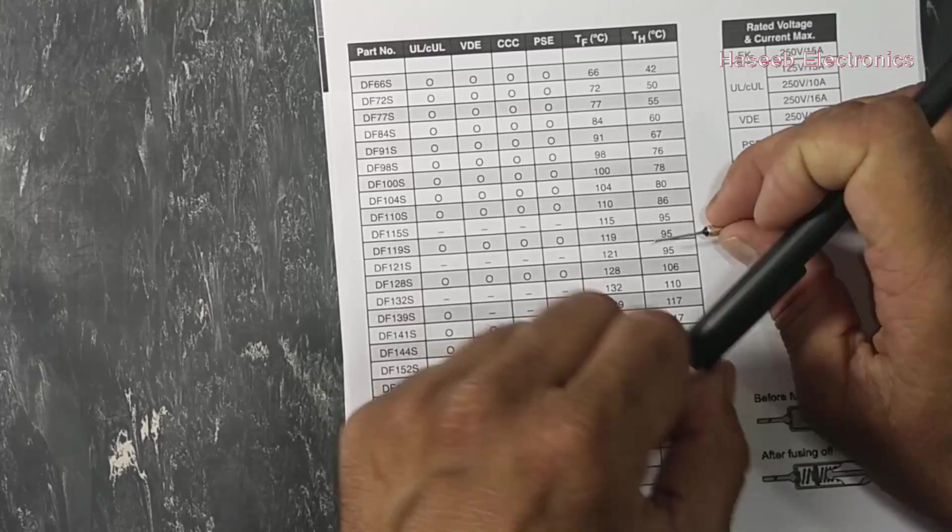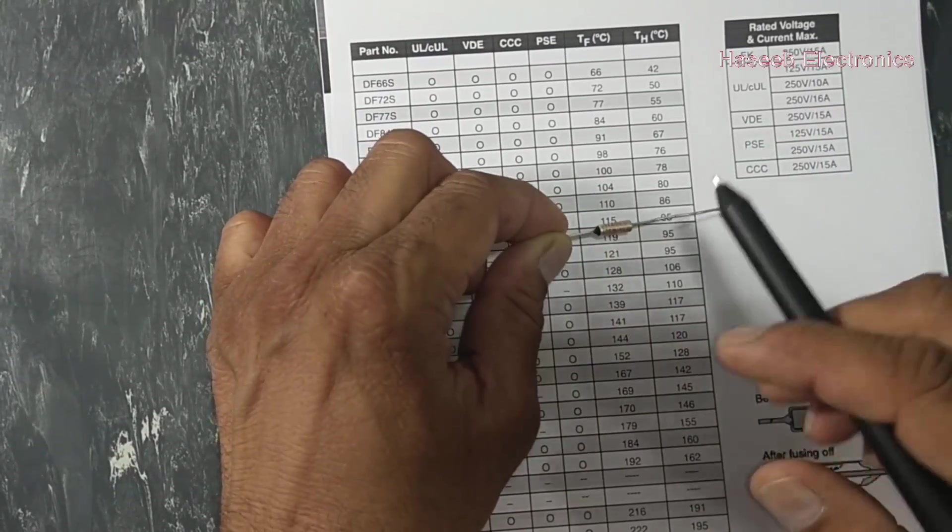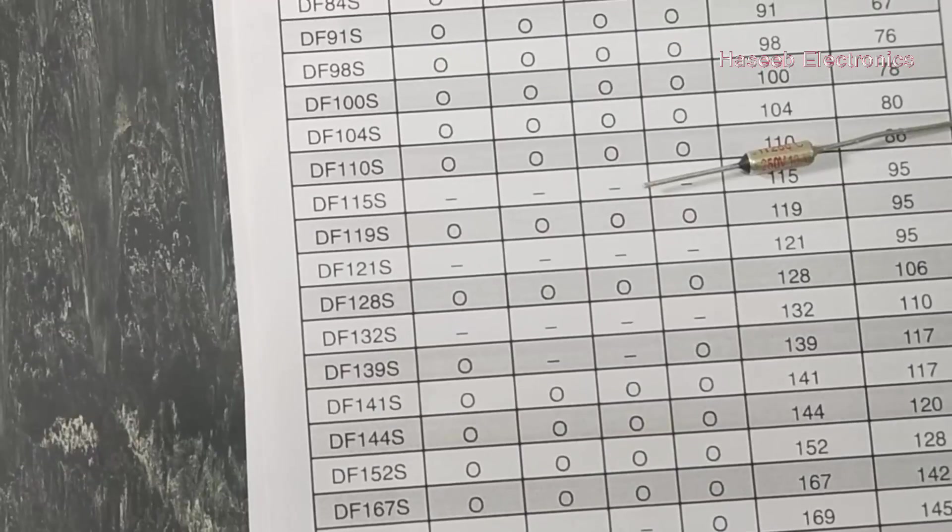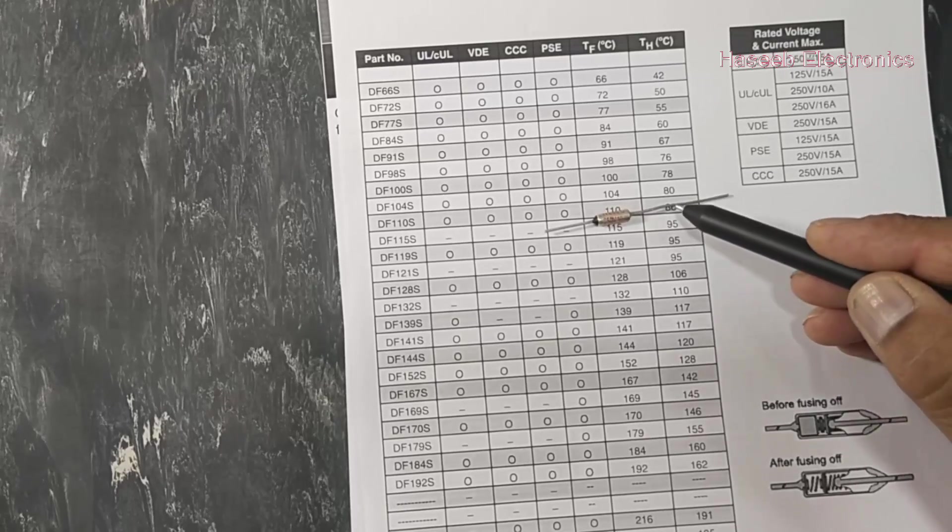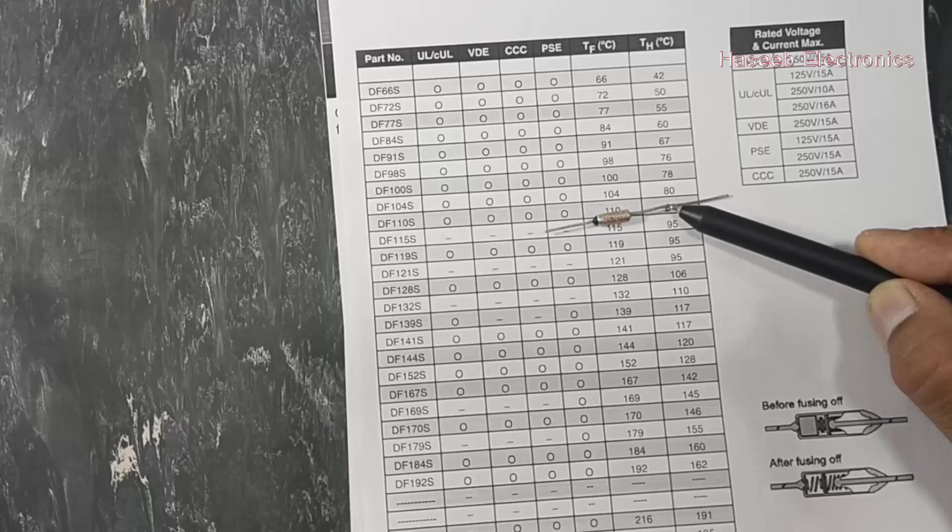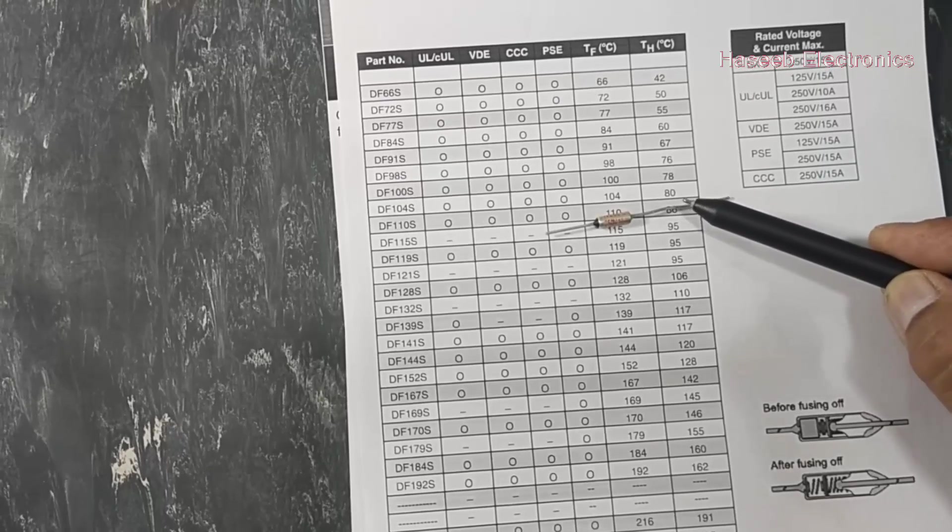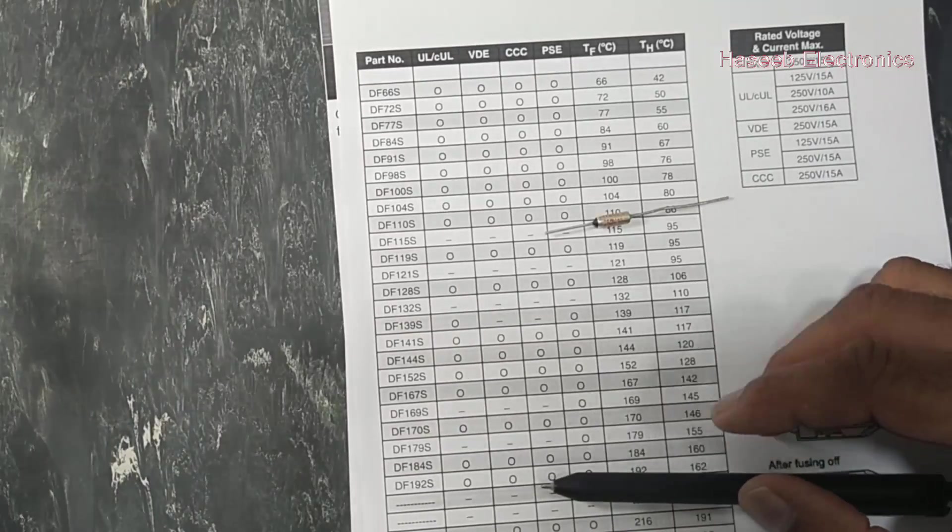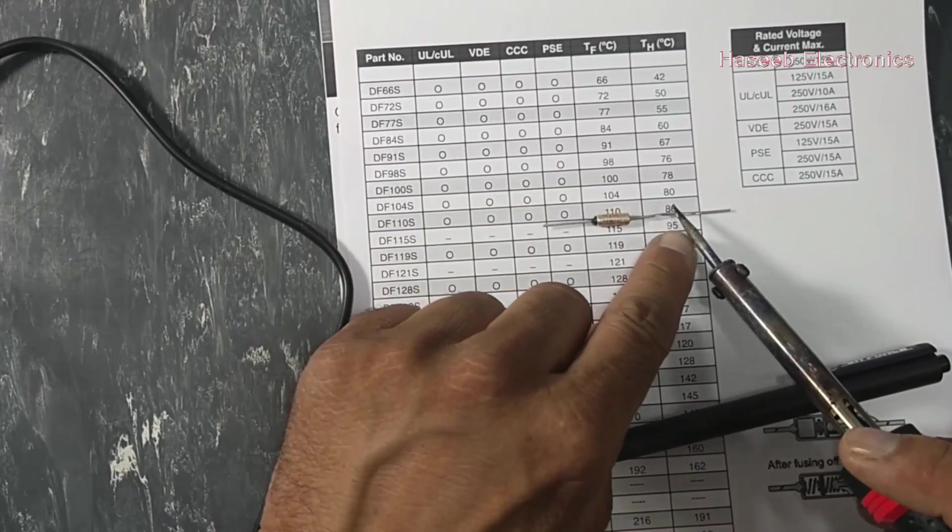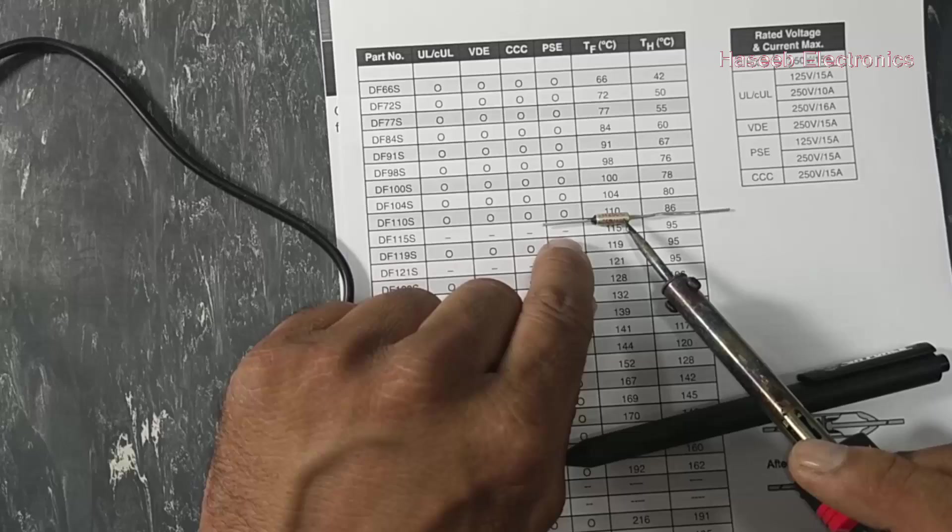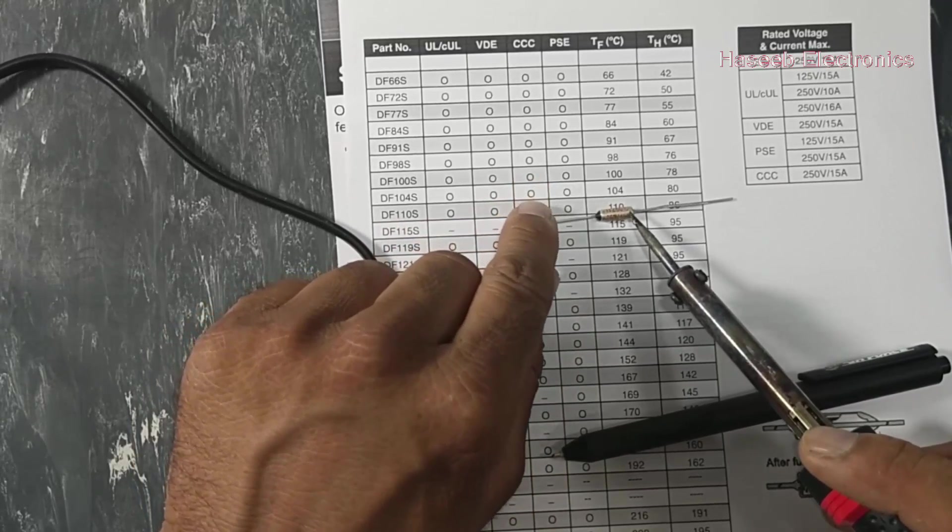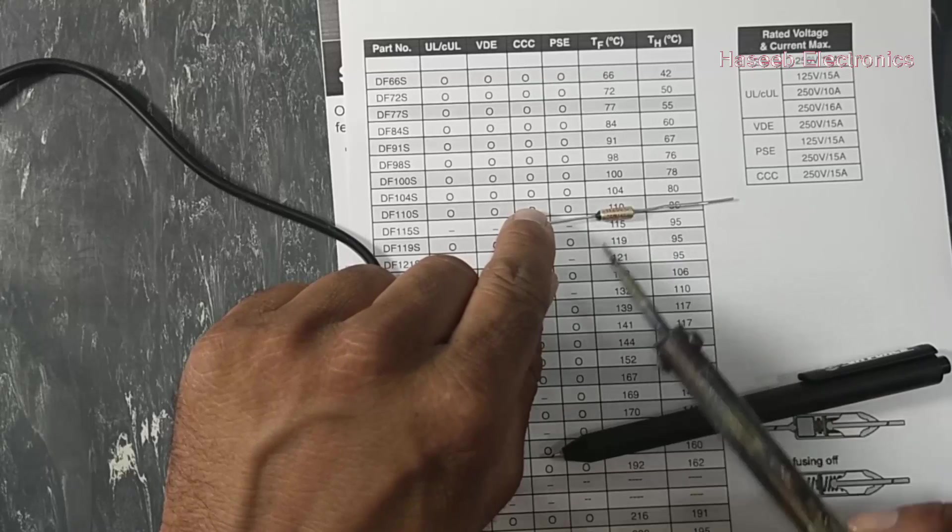As we know it is temperature sensitive. If you want to solder it, while connecting if we give a high temperature - for example we use a soldering iron that has temperature 350 degree centigrade and we make soldering here - this temperature, the soldering iron temperature, will damage this fuse.